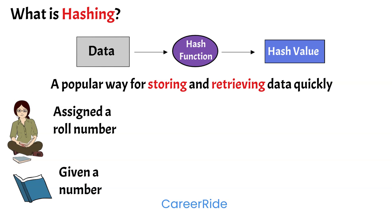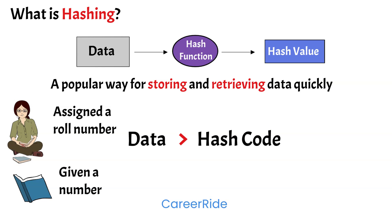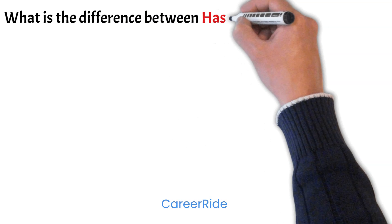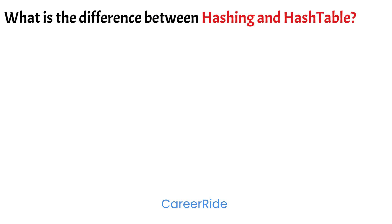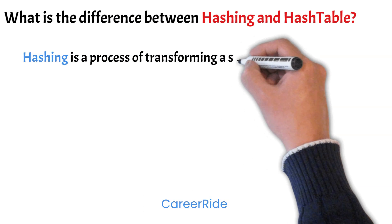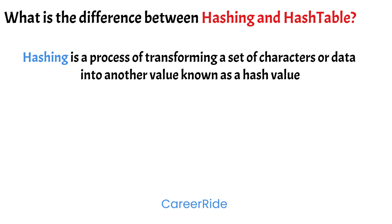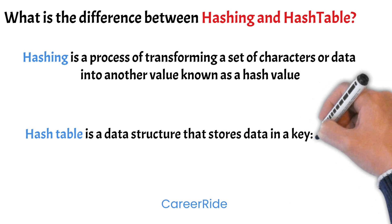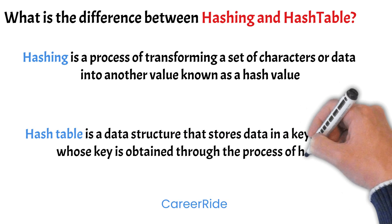In a hashing algorithm, a large block of input data is converted into an output of shorter value using a hash function. The hash value or hash code contains a fixed-length string that summarizes the input. Next, the index of the hash value is computed to map the hash value to an index into the data structure called the hash table. Now, what is the difference between hashing and hash table? Hashing is a process of transforming a set of characters or data into another value known as a hash value, whereas a hash table is a data structure that stores data in a key-value pair, whose key is often created through the process of hashing.